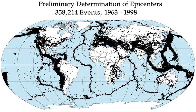In recent studies, geologists claim that global warming is one of the reasons for increased seismic activity. According to these studies, melting glaciers and rising sea levels disturb the balance of pressure on Earth's tectonic plates, thus causing an increase in the frequency and intensity of earthquakes.